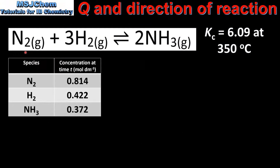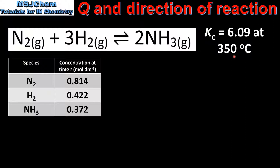Here we have the equation for the Haber process, in which nitrogen and hydrogen react together to form ammonia. The value of the equilibrium constant Kc is 6.09 at 350 degrees C.